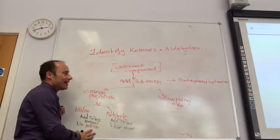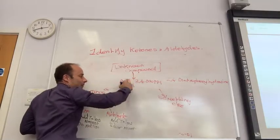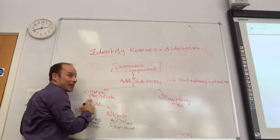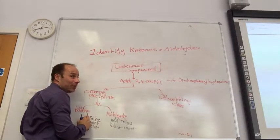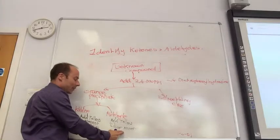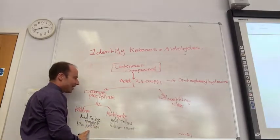So, it's very easy. You've got your unknown form of compound, add 2,4-dinitrophenylhydrazine. If you see an orange precipitate it's either an aldehyde or ketone. If you then add Tollens, an aldehyde will give you a silver mirror, a ketone wouldn't.